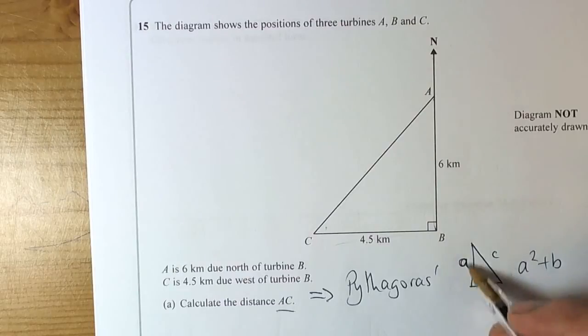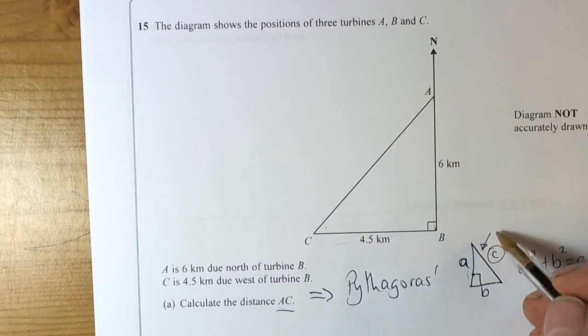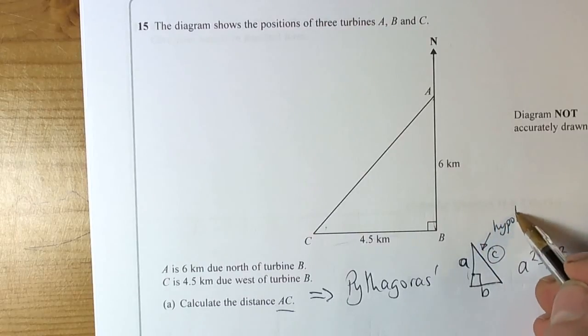So the theorem says that if I take the length of A squared plus the length of B squared, that will equal the length of C squared. C is always the hypotenuse, the longest side, and that is really important.